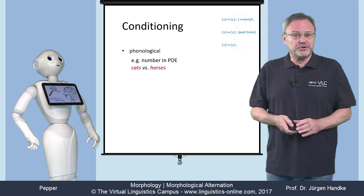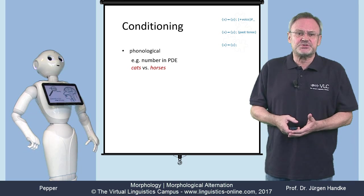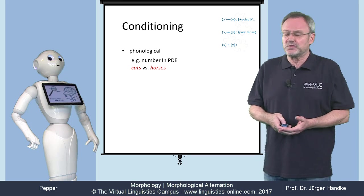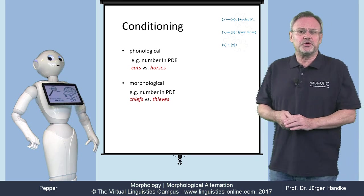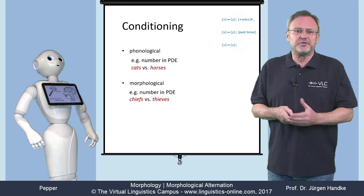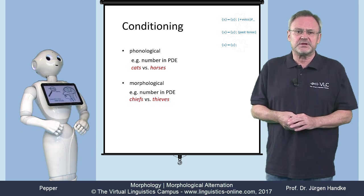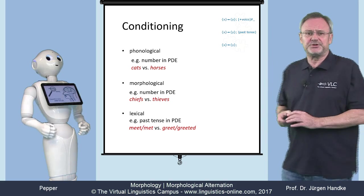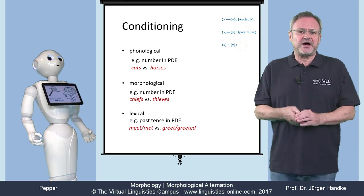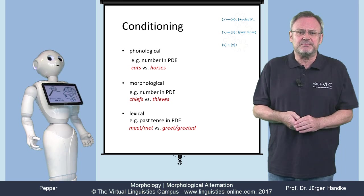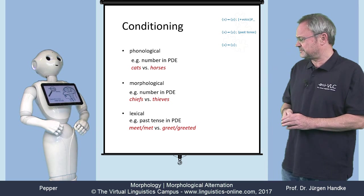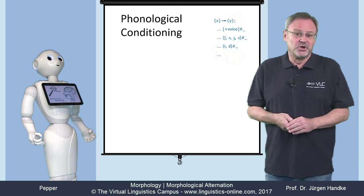Phonological conditioning, where the sound structure conditions the choice of allomorphs. Morphological conditioning, where the morphological context conditions the choice of allomorphs. And lexical conditioning, where the choice of allomorphs depends on a particular lexeme. Let's look at phonological conditioning first.